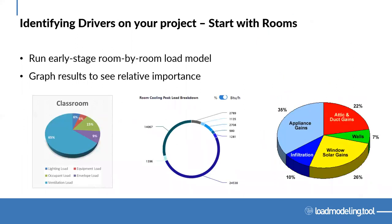Ways to identify that load — there are a couple of methods, but I think the first way is always to graph it. Go to your typical end uses — equipment, lighting, envelope, occupants — and just put them into a pie or donut chart, whichever fits your design best, and see what it looks like. You'll be able to very quickly see what's driving the load. Is it the solar gain? Is it the envelope load? The occupant load? This can be done quickly at early stage, room by room or for a whole building. Doing it room by room gives the advantage of drilling into the assumptions for those specific rooms, which will vary even at early stage.